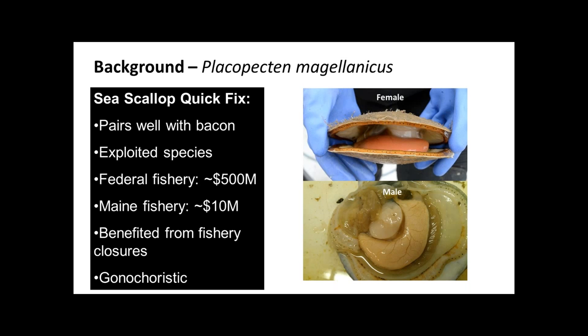They're gonochoristic, meaning they have males and females. Occasionally you find hermaphrodites, but it's like one in a thousand or three thousand. The female gonads are orange and the male is a white or cream color. During peak spawning season, before they spawn, these gonads can make up 30 to sometimes 40 percent of their wet body weight.